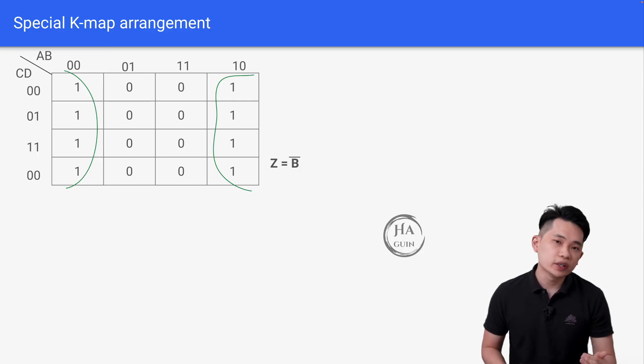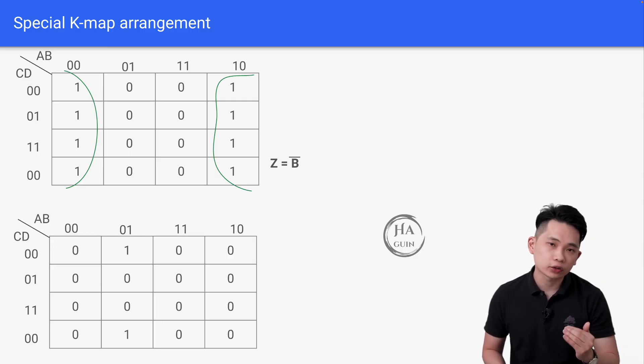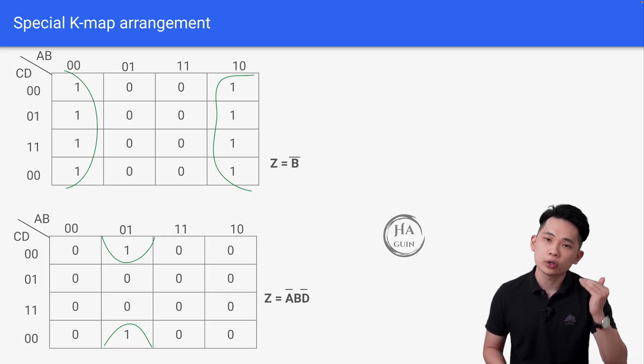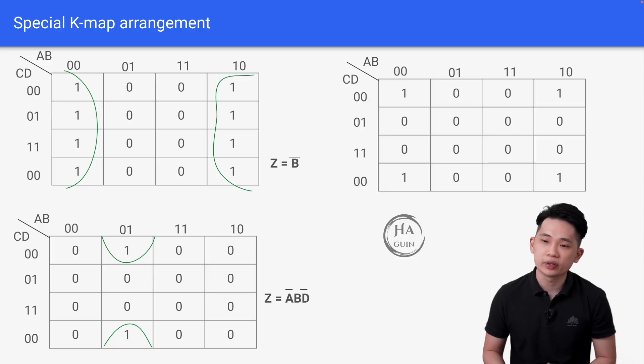The second example would be this one here. Combining the top and bottom will result in Z equals not A, B, not D. And then the last example would be this one here.